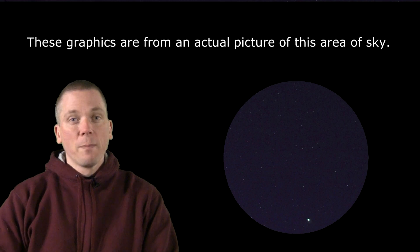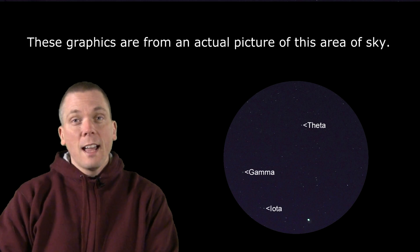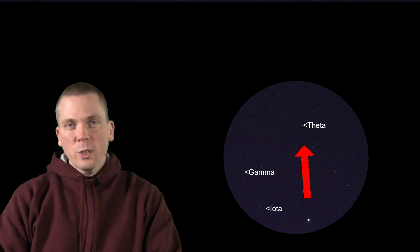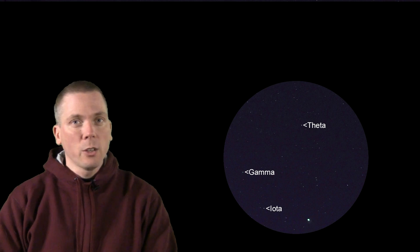Using binoculars, place Sirius to the bottom of the field. You should see these three 4th magnitude stars: Gamma, Iota and Theta Canis Majoris. There's a slightly dimmer 5th magnitude star between them. Draw a line from Sirius through Theta. Those two stars are 5 degrees from each other, which will place them on opposite sides of a binocular field of view.